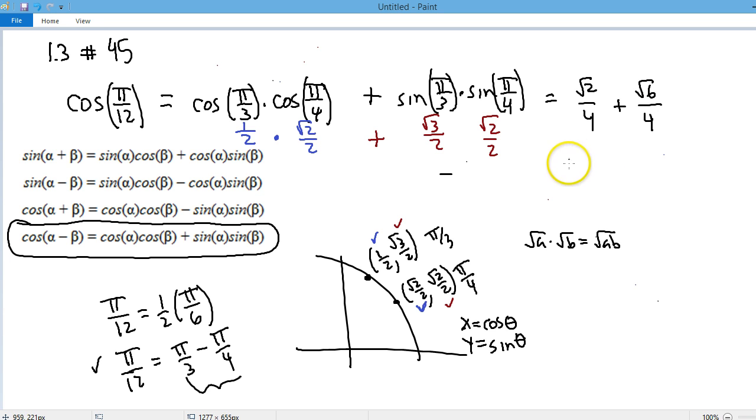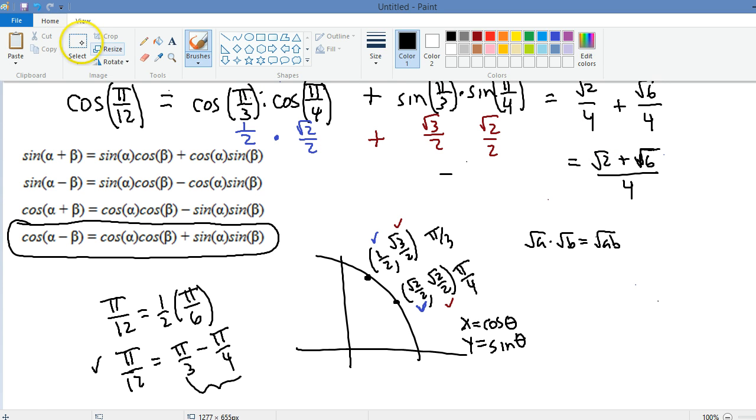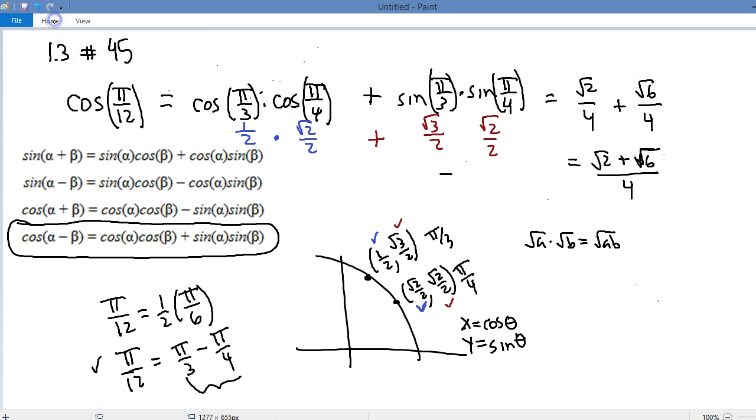And so that's our answer. Root 2 plus root 6 all over 4. Now that might not be in the simplest form. I mean it's the answer, but it is the answer.